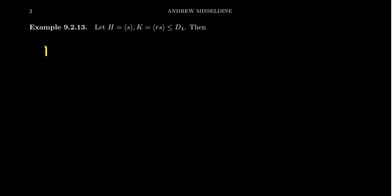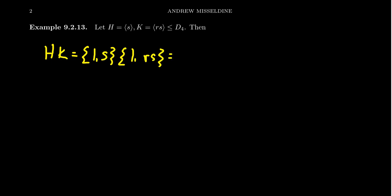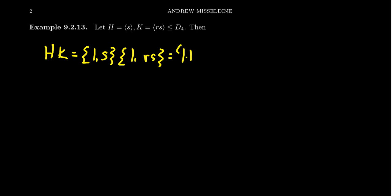To compute the set HK, we take H = {1, s} and K = {1, rs}. Looking at all possible combinations — kind of like the FOIL method — we get 1·1, 1·rs, s·1, and s·rs. You have to be very careful about order here because D4 is a non-abelian group, so the order of multiplication matters.